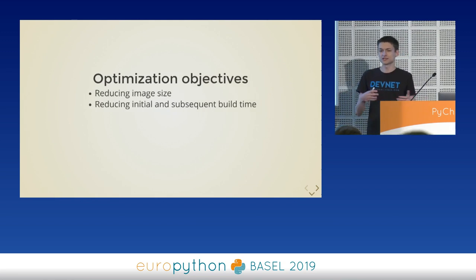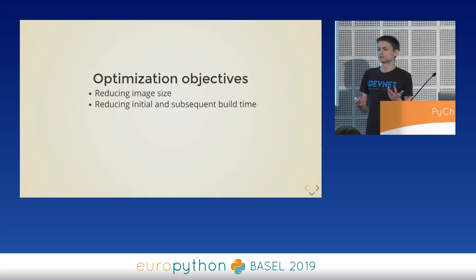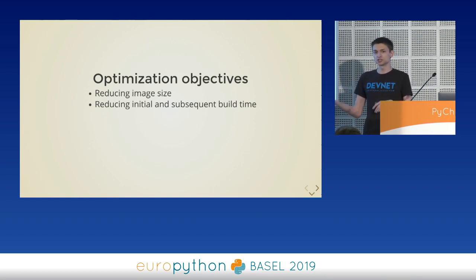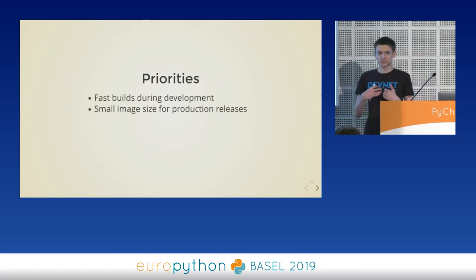Before we go further, let's define our optimization objectives. There are two things: image size, and build time — both initial and subsequent build time. The priorities I defined for my projects are: during development, I want fast builds and care less about image size; for production, I prefer small image size. Your priorities could be different.